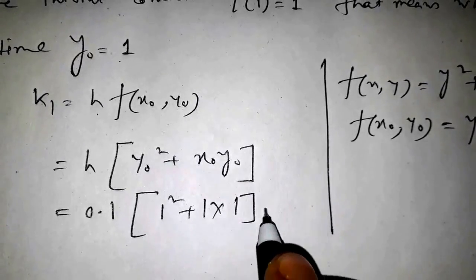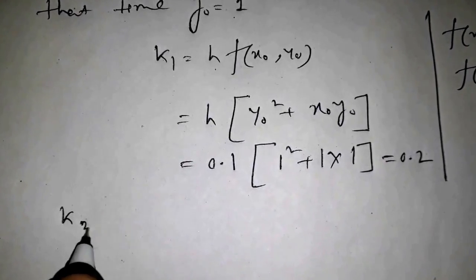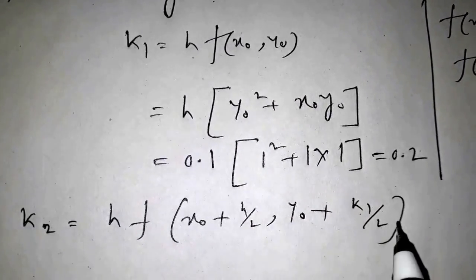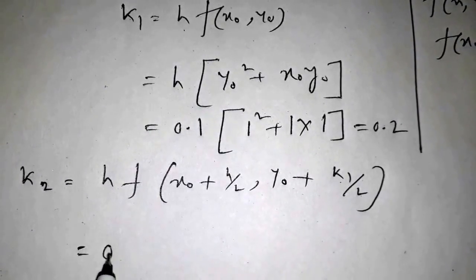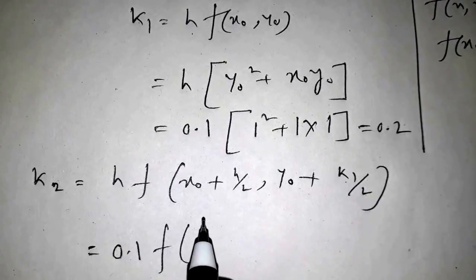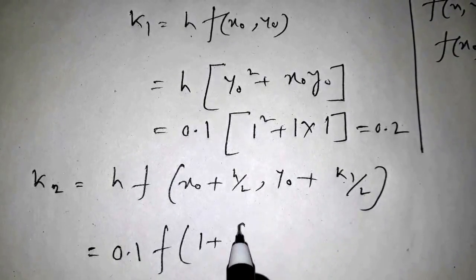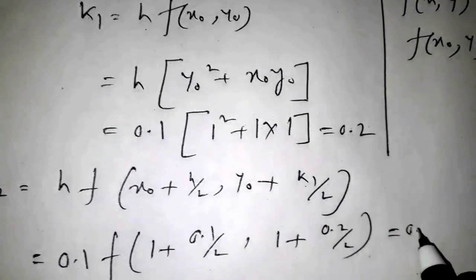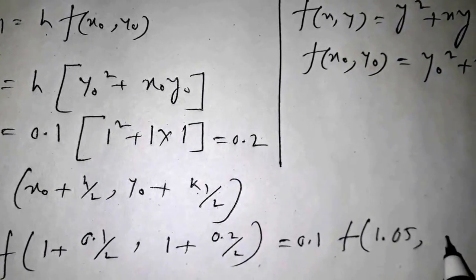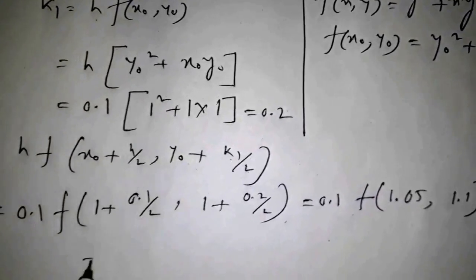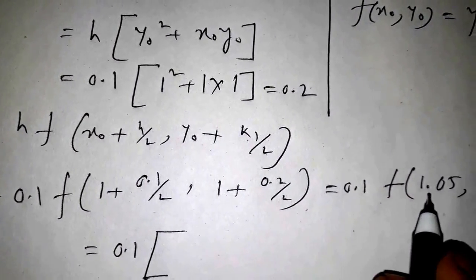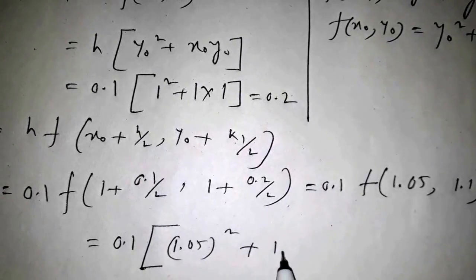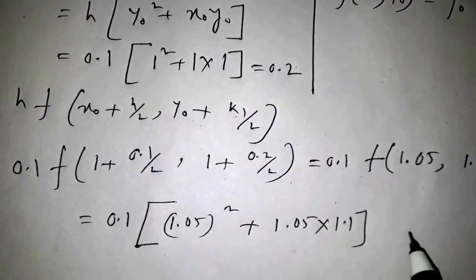Next we find k2 = h·f(x₀ + h/2, y₀ + k1/2). Putting in values: h = 0.1, x₀ = 1, so x₀ + h/2 = 1.05; y₀ + k1/2 = 1 + 0.2/2 = 1.1. So k2 = 0.1·f(1.05, 1.1) = 0.1·(1.05² + 1.05×1.1), which gives k2 = 0.2365.